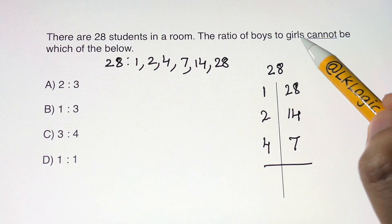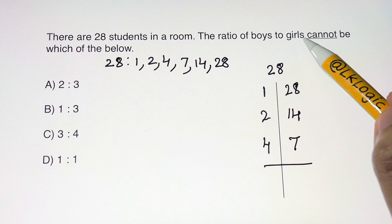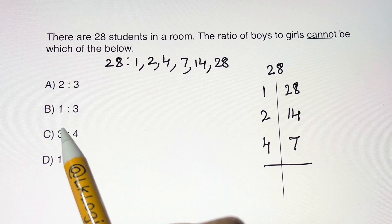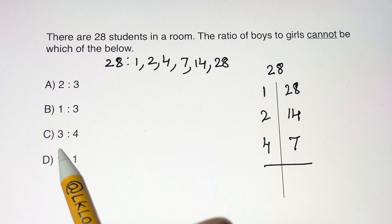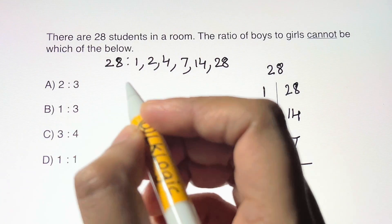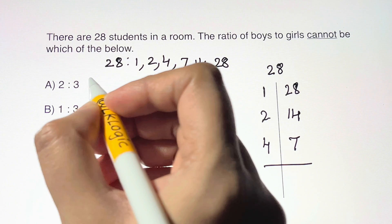Now when selecting ratios for two variables, that is boys and girls, the two sides of the ratios must add up to be a factor of the total student count. So let's add up and check. 2 plus 3 equals 5. Is 5 a factor? No.